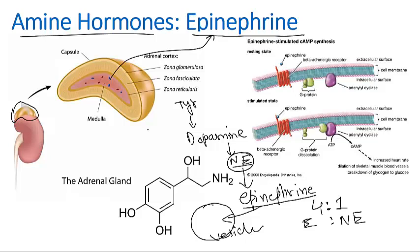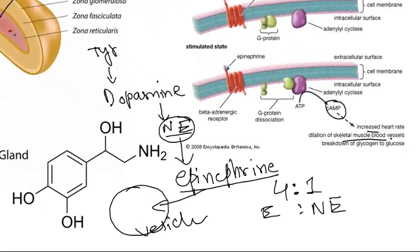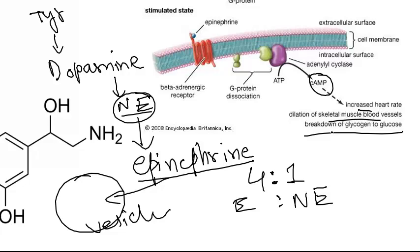Catecholamines are water soluble, so they can travel through the blood as dissolved particles. Epinephrine mediates cell signaling through activation of G-protein coupled receptors, which reactivate cyclic AMP. This increases heart rate, causes dilation of skeletal muscle, and triggers the breakdown of glycogen into glucose whenever epinephrine interacts with the beta-adrenergic receptor, activating the enzyme that converts ATP into cyclic AMP.